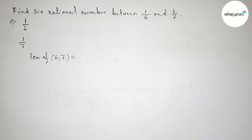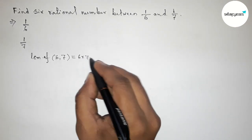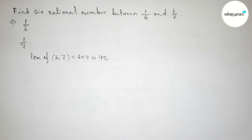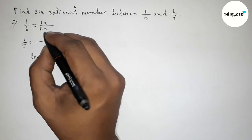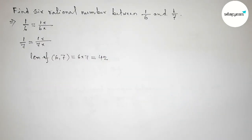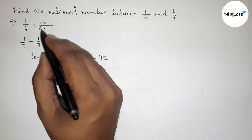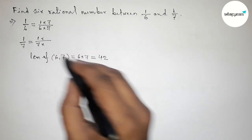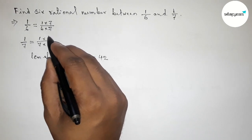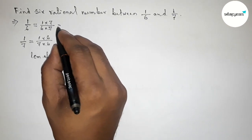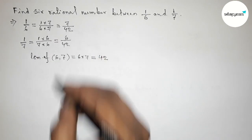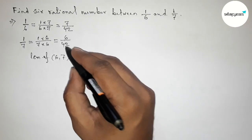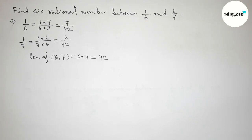6 and 7 are prime to each other, so their LCM will be their product. Taking 6 into 7, that is 42. So we have to make both the denominators equal to 42. Writing down 1 by 6 and 1 by 7 and multiplying numerator and denominator accordingly. So 1 by 6 becomes 7 by 42, and 1 by 7 becomes 6 by 42. Now both the denominators are 42 and the same.